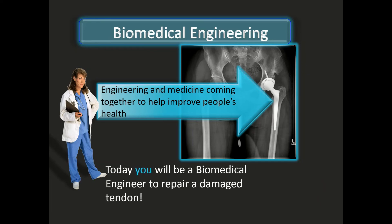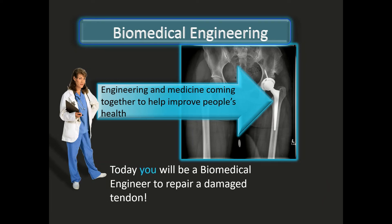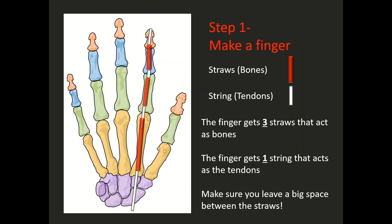Now with this activity, you will be a biomedical engineer to repair a damaged tendon. In your downloadable lesson plan, you will find a diagram of a hand. You can ask your mom or your dad to print out that hand for you. And this is going to be your hand, which you're going to do your biomedical engineering on.